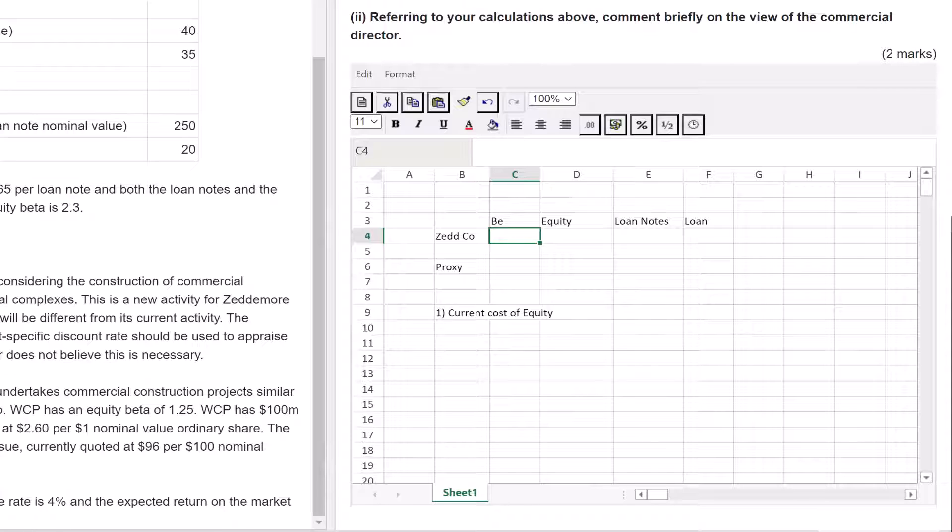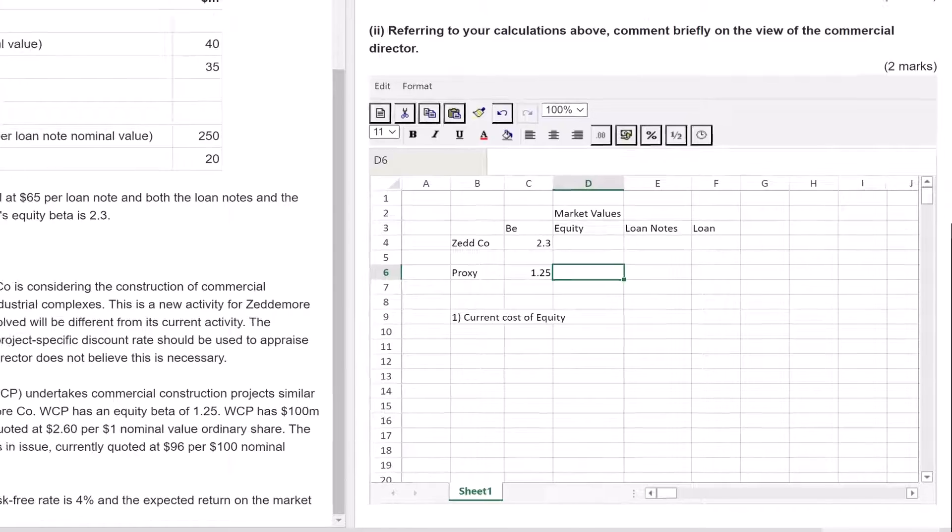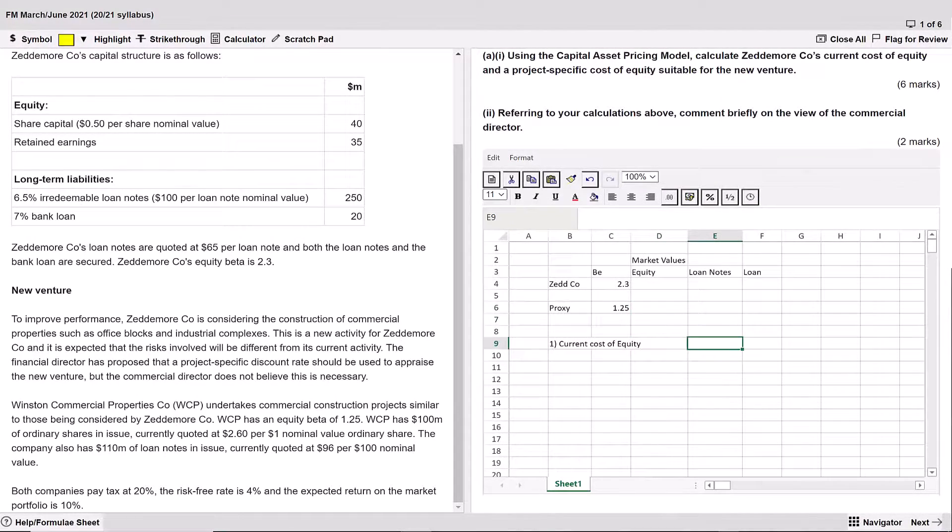Zeddymore company's equity beta is 2.3. The proxy company was 1.25. Now we need the market values to do this specific cost of capital. These are market values. When you do them, do it in the cell. Do not write out what you're doing because the marker can see. But you do need to do your workings in the cell. Don't just put a figure there because if it's wrong, they can't help. Focus on doing the workings in the cell and then you will be clearly marked if there's any own figure rules, marks to follow through.